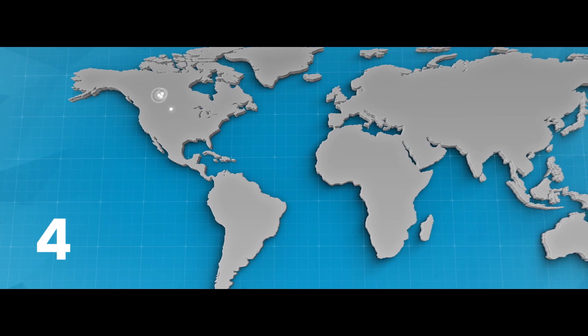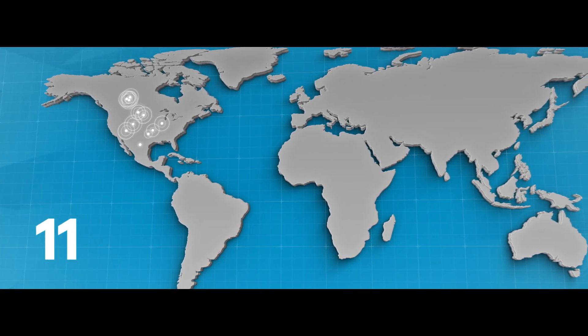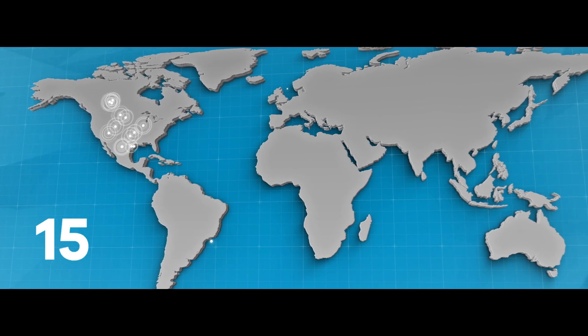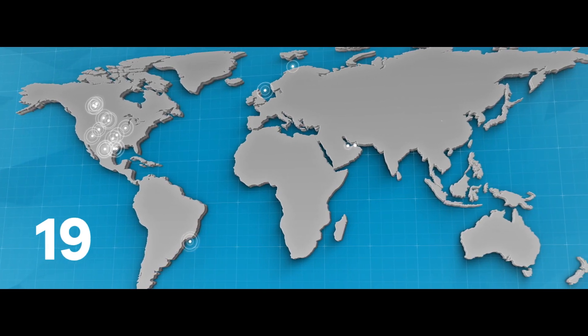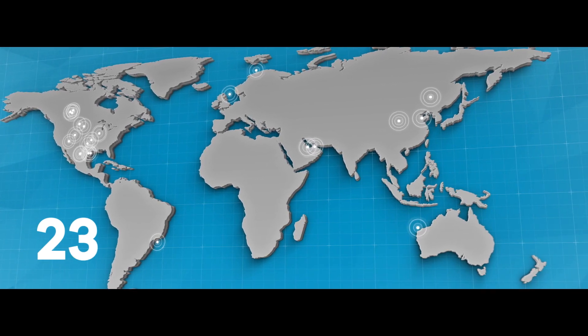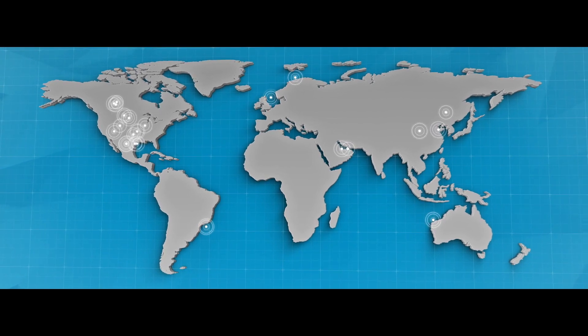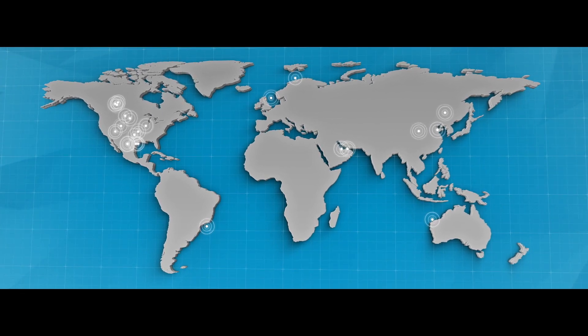Around the world, 23 commercial-scale facilities are underway, capturing CO2 from industries such as natural gas processing and power generation, and the production of iron and steel, hydrogen, ethanol and fertilisers. A further 20 facilities are in development to accelerate the decarbonisation of industry.